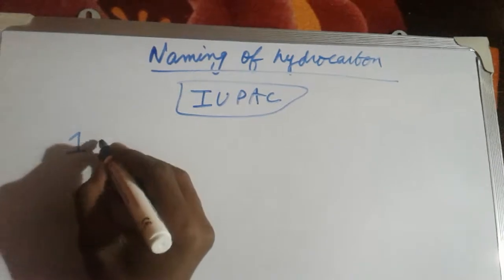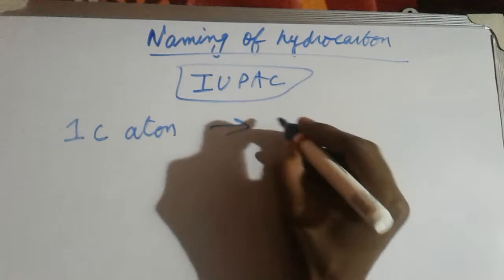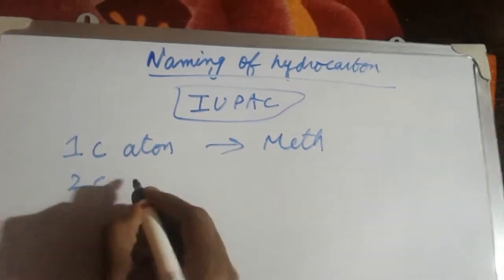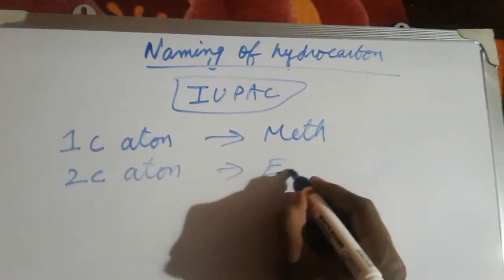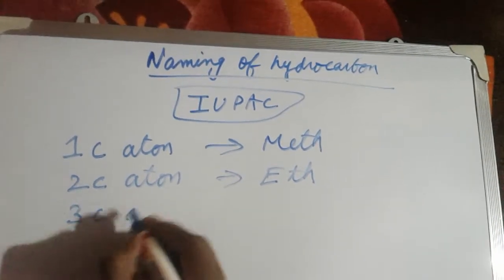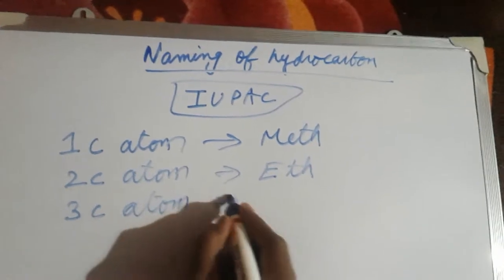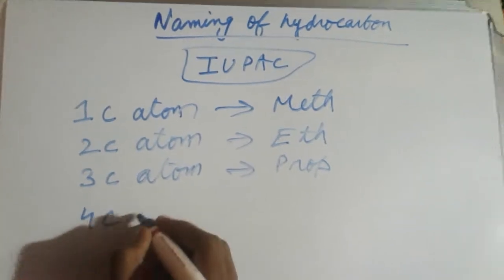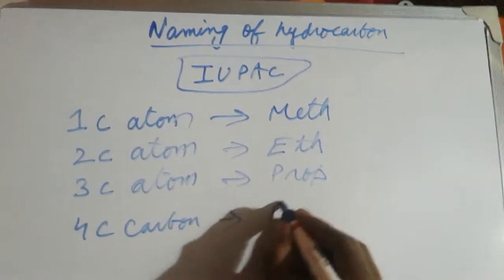If there is one carbon atom, the hydrocarbon is indicated by 'meth.' If there are two carbon atoms, it's indicated by 'eth.' Three carbon atoms are indicated by 'prop,' and four carbon atoms by 'but.'